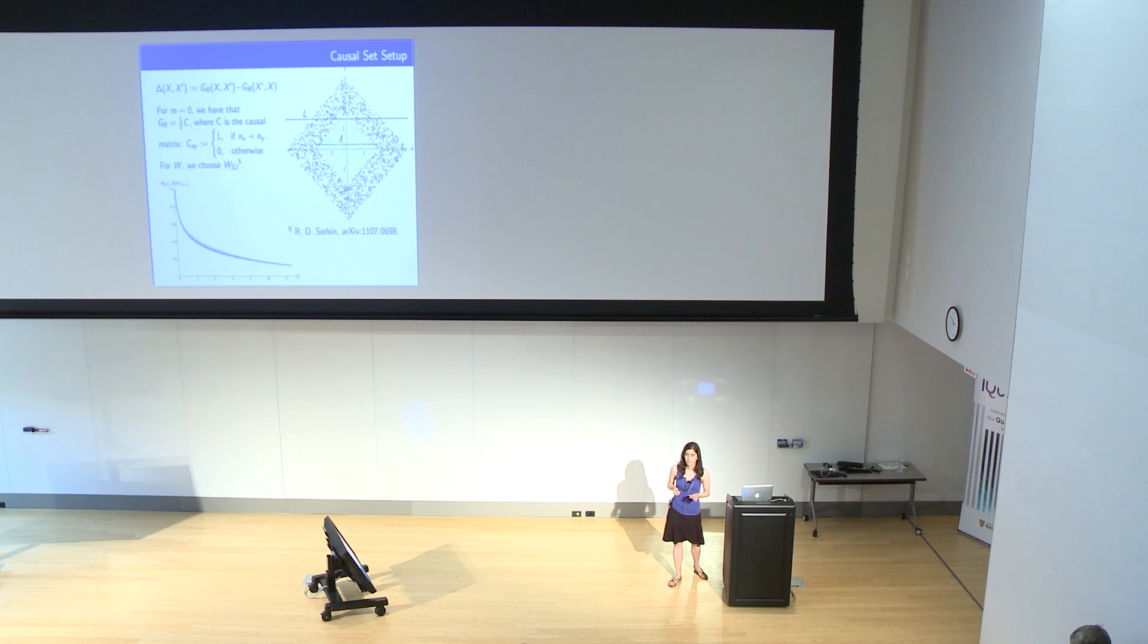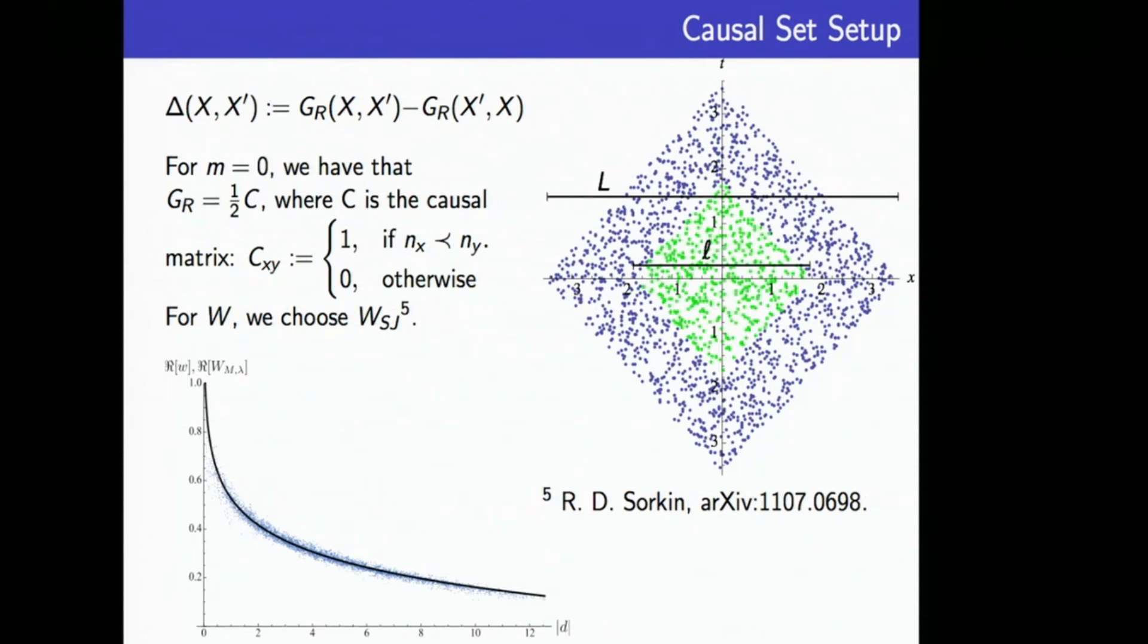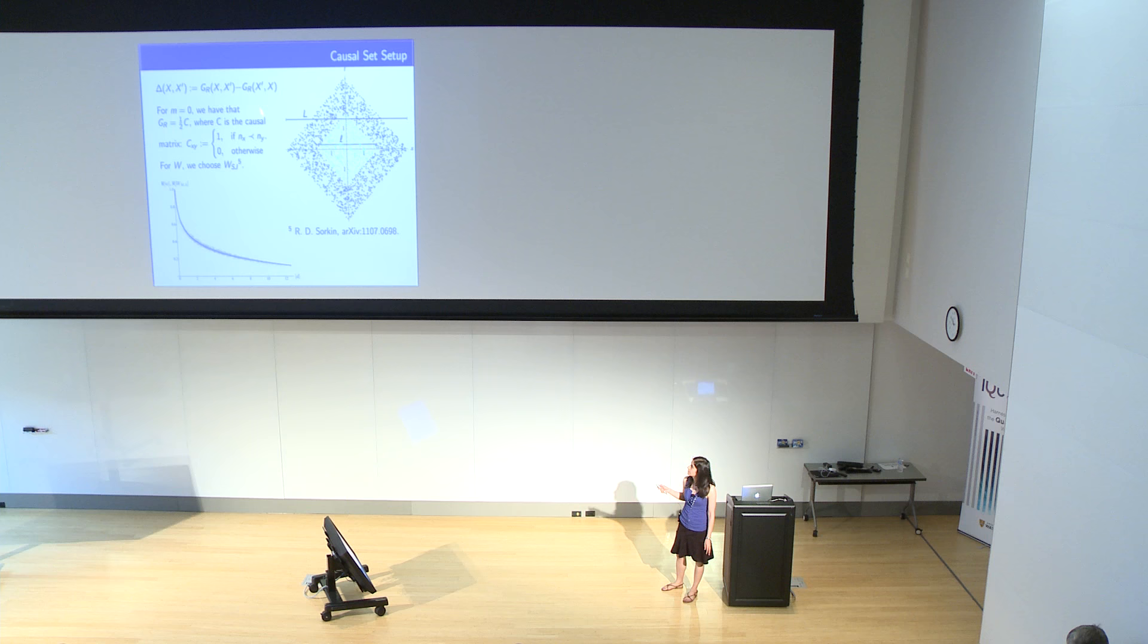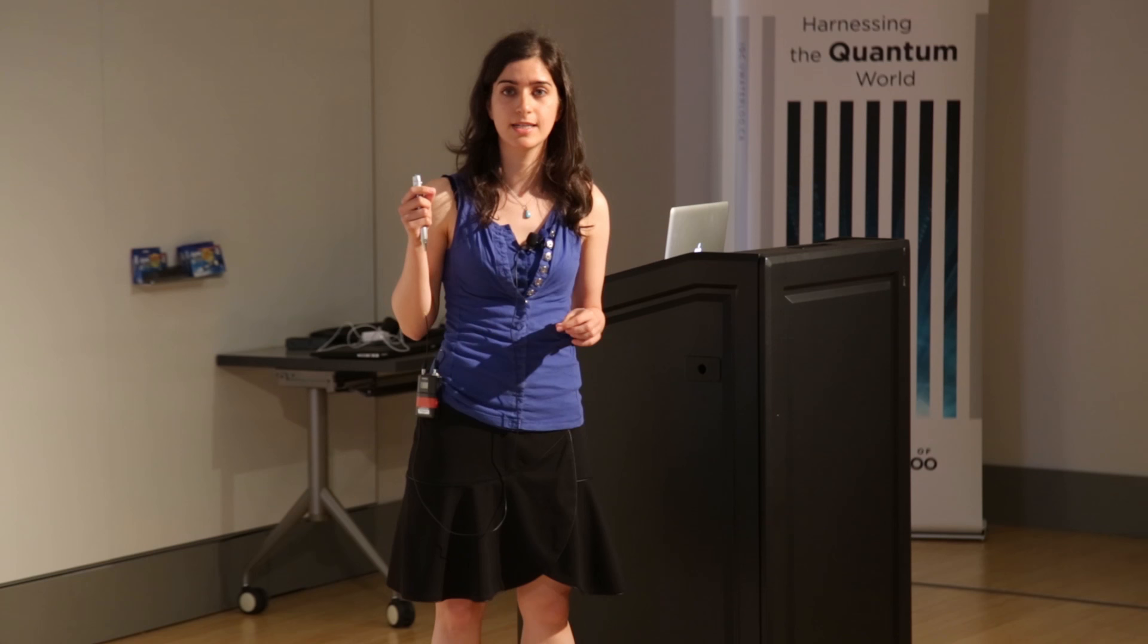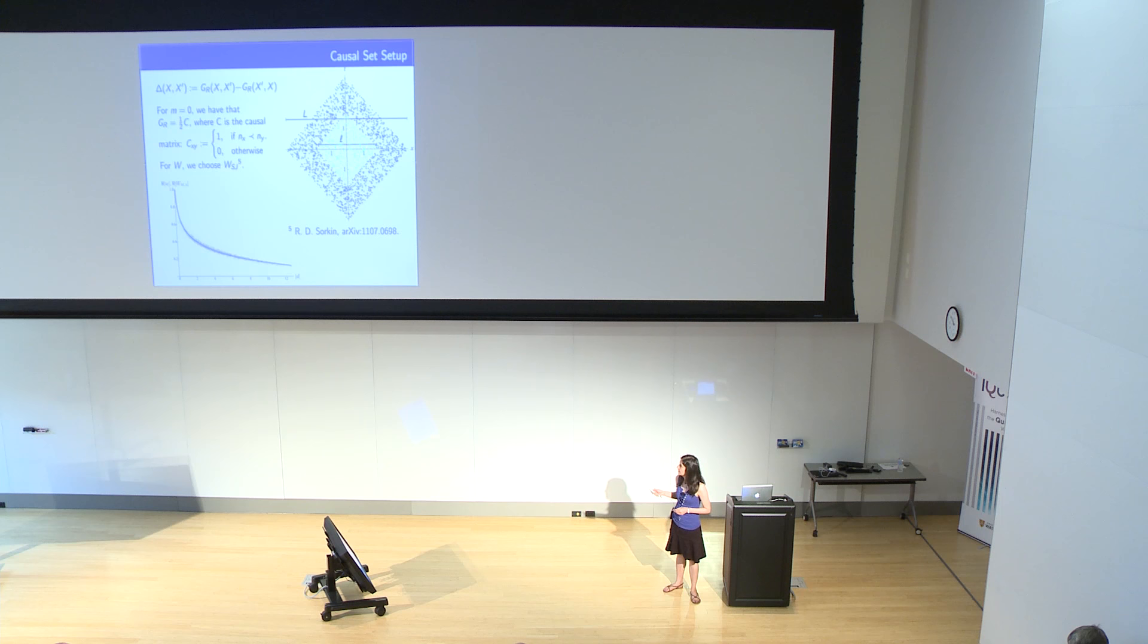Now we can do the exact same thing for the causal set. Again we have the setup of a smaller causal diamond within a larger causal diamond. We understand what W and delta look like for these causal sets. Delta can be expressed as the difference between the retarded Green's function and its transpose. The retarded Green's function is one half the causal matrix, where the causal matrix is a matrix where we put a 1 whenever two spacetime elements are causally related and we put a 0 otherwise, and we also put zeros on the diagonal.